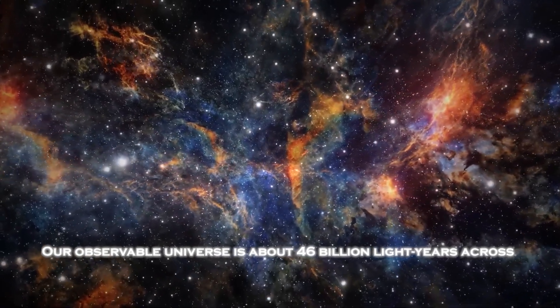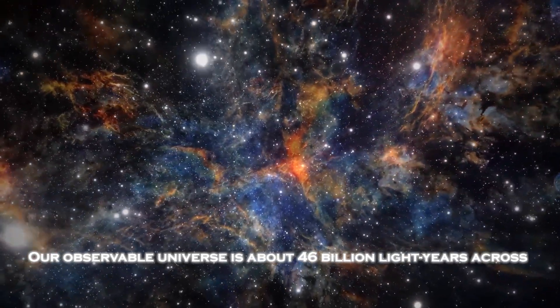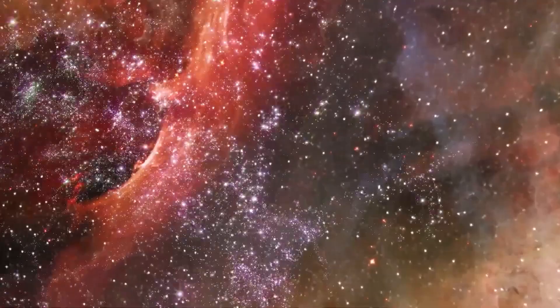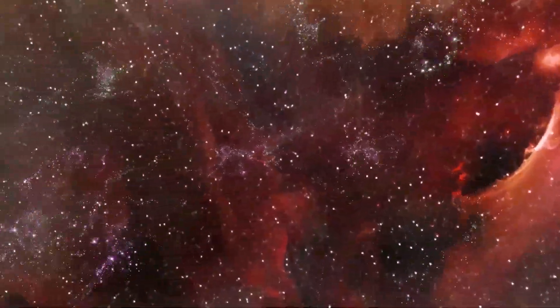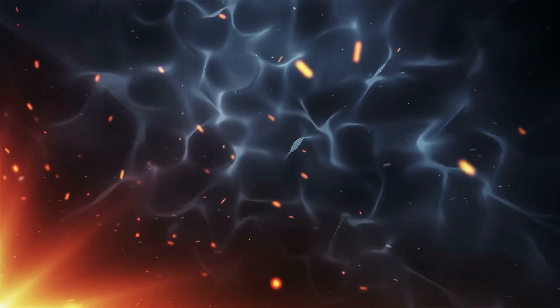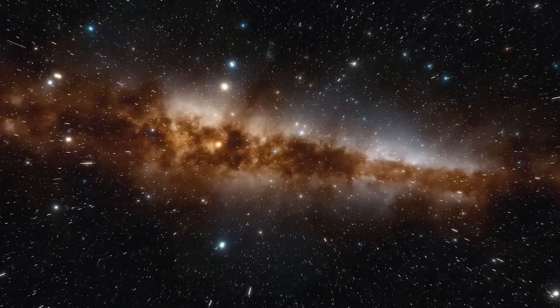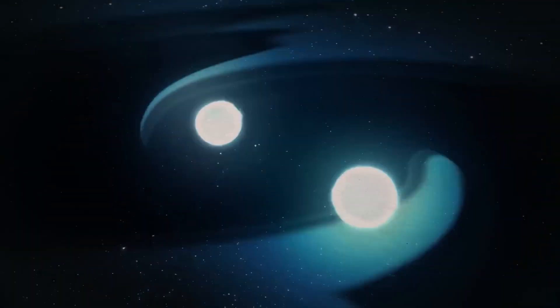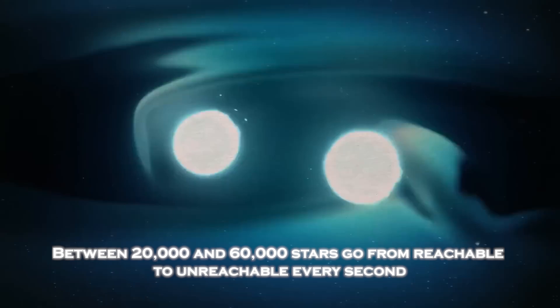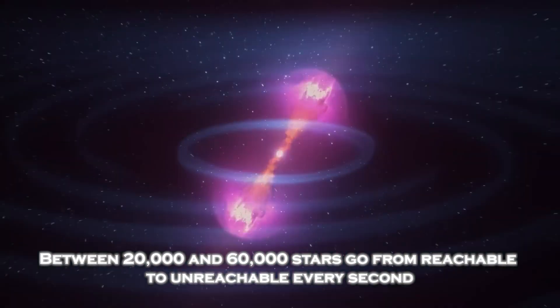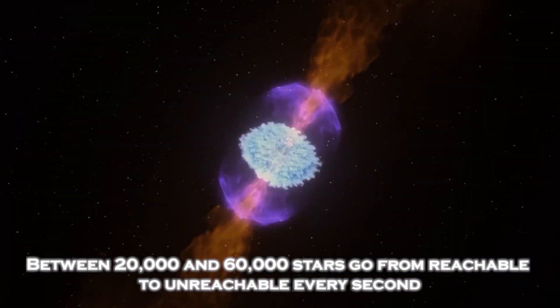Our observable universe is about 46 billion light years across, and if we consider that all regions of space contain an even number of galaxies, only 6% of all galaxies in the current universe are accessible to us. This means that even if we were traveling at the speed of light today, we would only be limited to exploring only a small fraction of the universe. Furthermore, between 20,000 and 60,000 stars go from reachable to unreachable every second.